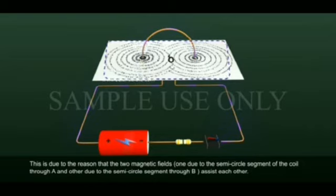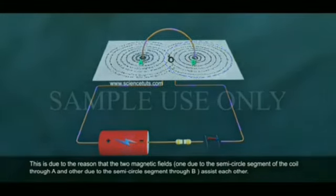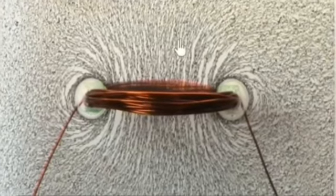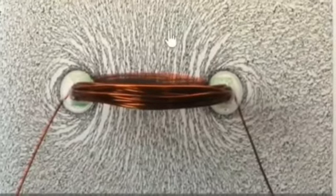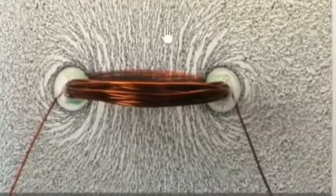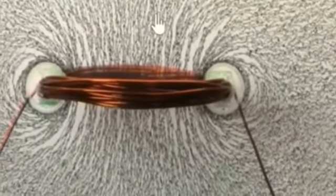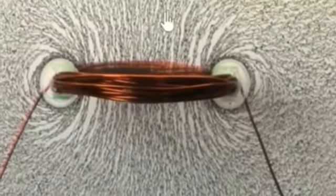This is because the two magnetic fields — one due to the semicircle segment A and the other due to semicircle segment B — combine with each other. We know that the magnetic field produced by a current carrying wire at a given point depends directly on the current passing through it. Therefore, if there is a circular coil having n turns, the field produced is n times as large as that produced by a single turn.